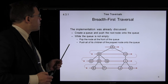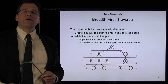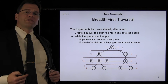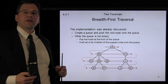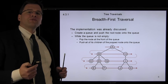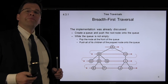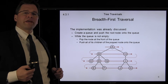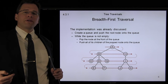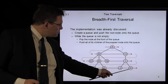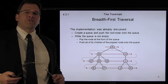To implement breadth-first traversal: we create a queue and push the root node onto it. Then, while the queue is not empty, we pop the node at the front of the queue, push all of its children onto the queue, and repeat. This continues until finally we pop the last node and the breadth-first traversal is finished.